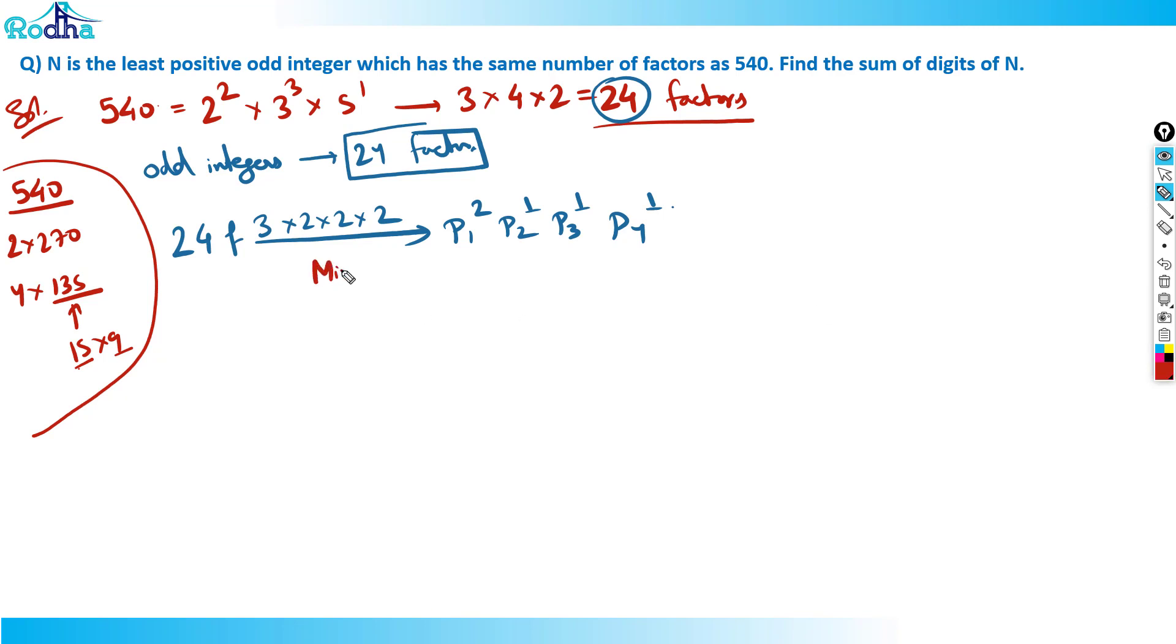What is the minimum possible value? So minimum and have that two odd integers. P1 has got the highest power here that can put the least odd prime number that is three. Then the other has got symmetrical powers like one one one, I can in any order I can put the odd numbers like five seven and eleven.